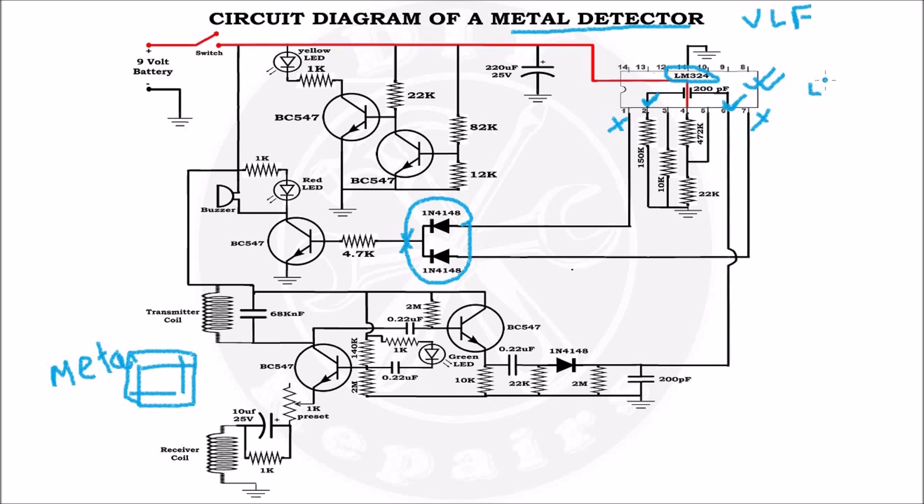LM324 has 4 operational amplifiers but only 2 are used in this circuit. So we can also use LM358 dual channel operational amplifier with some modification in the circuit. Due to this potential divider network, the DC voltage at pin number 5 of this IC should be 0.4V.